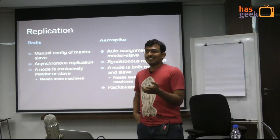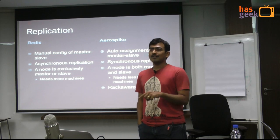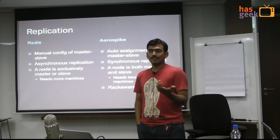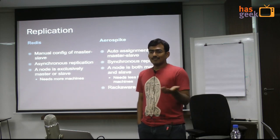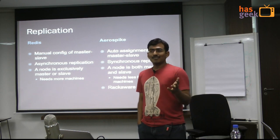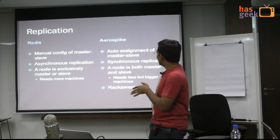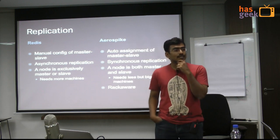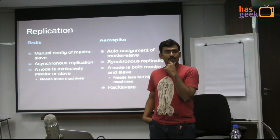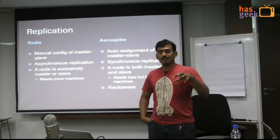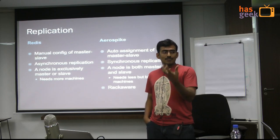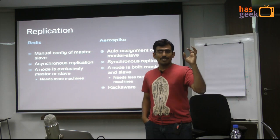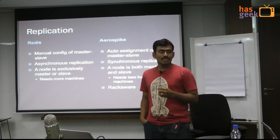Cassandra and Couchbase don't do synchronous replication by default — you have an option for synchronous replication at an extra latency cost. Aerospike has tuned its network stack so much that it can outperform others in synchronous replication. Cross-data-center replication across geographies is always asynchronous — so if you have one cluster in Bangalore and one in Delhi, that's asynchronous replication.